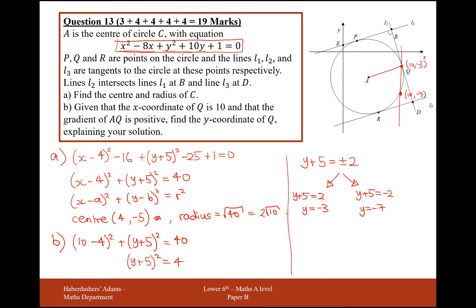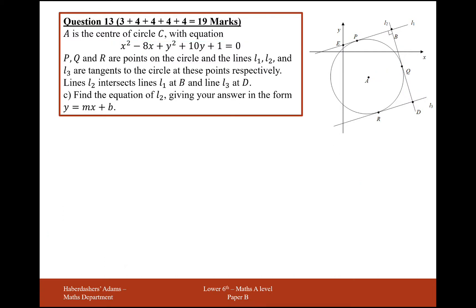What I'll do here, it does say explain your solution. So what I'm going to need to write here is reject y equals minus 7 as the coordinate 10 minus 3 will give a positive gradient. So whenever it asks you to explain something, you are going to have to write a sentence. It's not worth just showing it mathematically. So you do have to write a sentence.